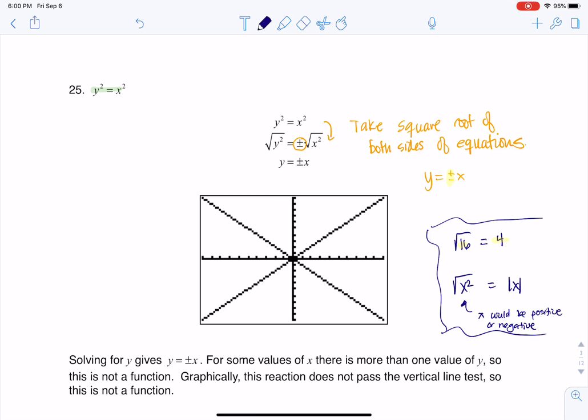All right, because if I plugged in positive 4 for x, well, 4 squared is 16, and the square root of 16 is 4. But also, if I plugged in x being negative 4, well, negative 4 squared is also 16, and the square root of 16 is 4. So that's why we put this absolute value here, or most of the time we write plus or minus x.